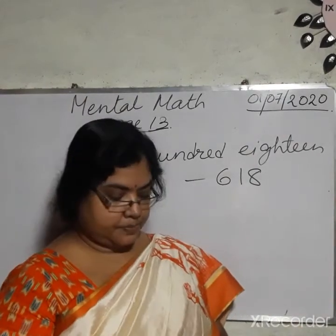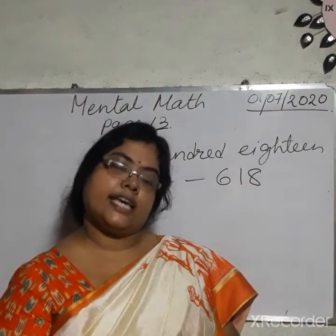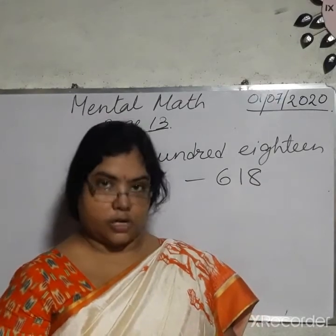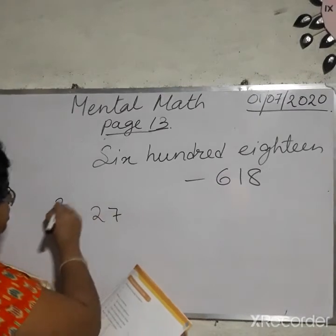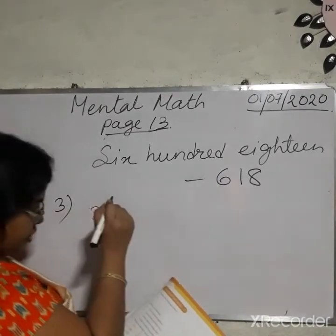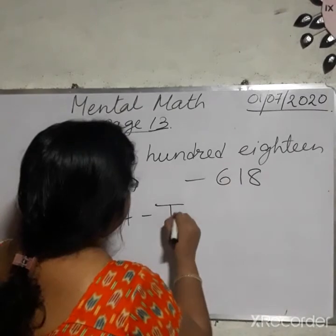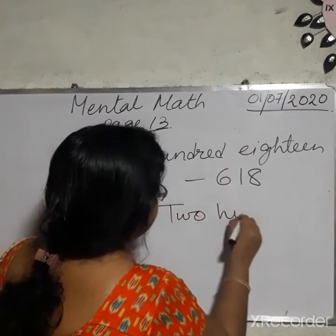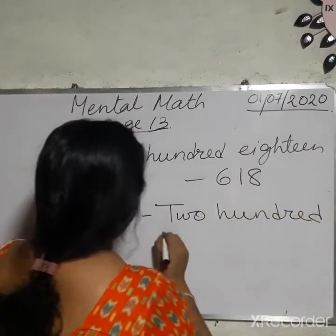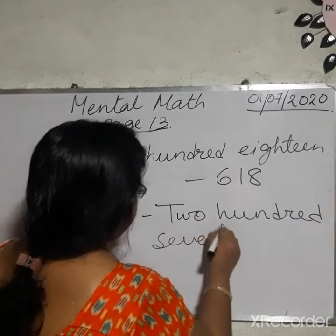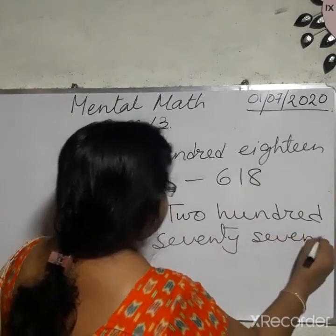Number 3: write the number name. Here, again, you have to write in words. 277. This is number 3 — here you have to write 277.